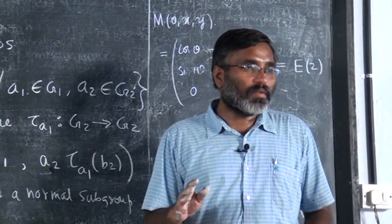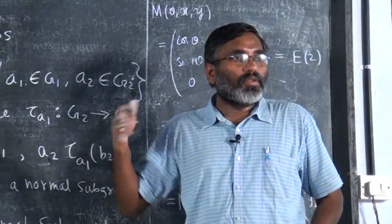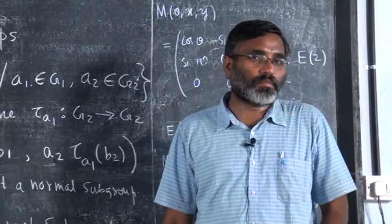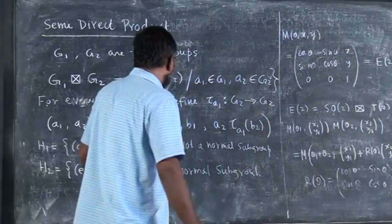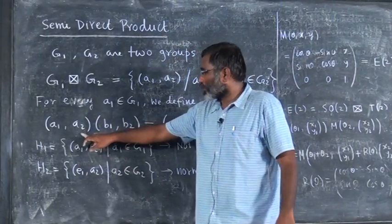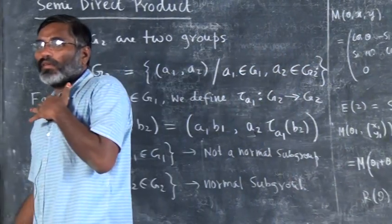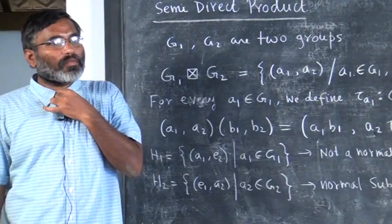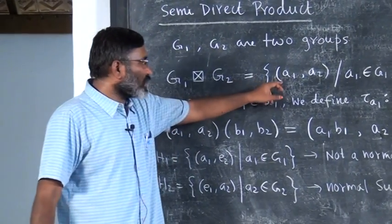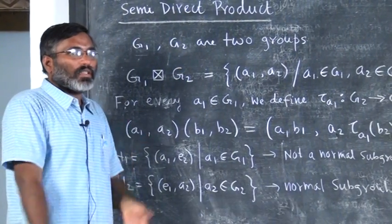You don't have to take specific examples. Let this be an automorphism, use the property of automorphism, and then you can show this is a group satisfying all the axioms. The dimensionality of this group — the order of the direct or semi-direct product — equals the product of the orders of the individual groups, because in terms of set structure there is no difference; only the composition differs.